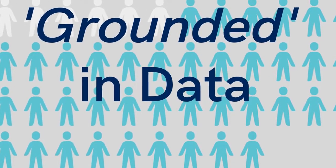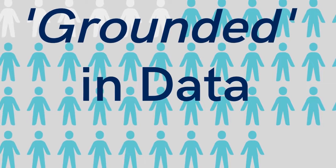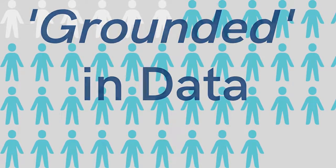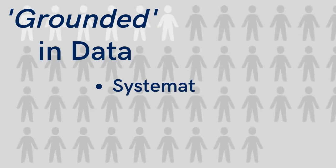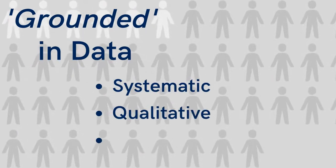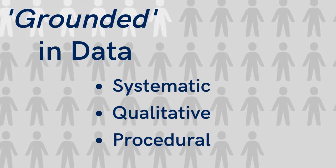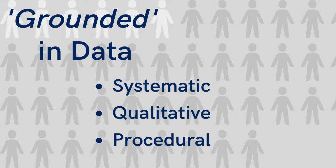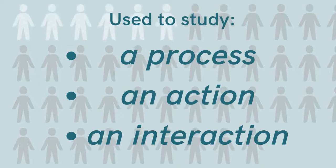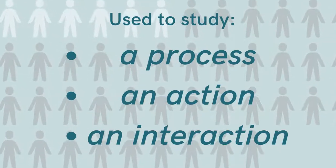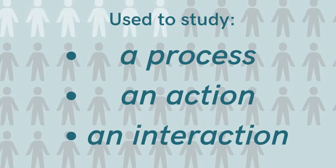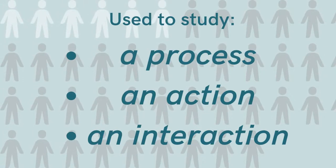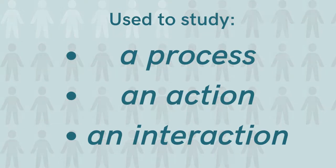Unlike other research methods, the theory is developed after an exhaustive data collection process, making the theory grounded in data. Grounded theory is useful for beginner researchers as it provides a step-by-step, systematic, qualitative process. It's used to study social issues or phenomena such as a process, action, or interaction.